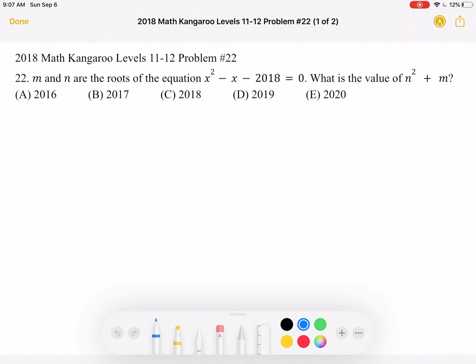m and n are the roots of the equation x² - x - 2018 = 0. What is the value of n² + m?